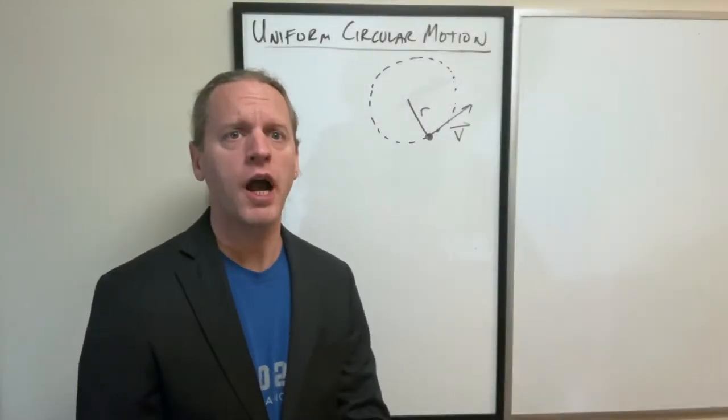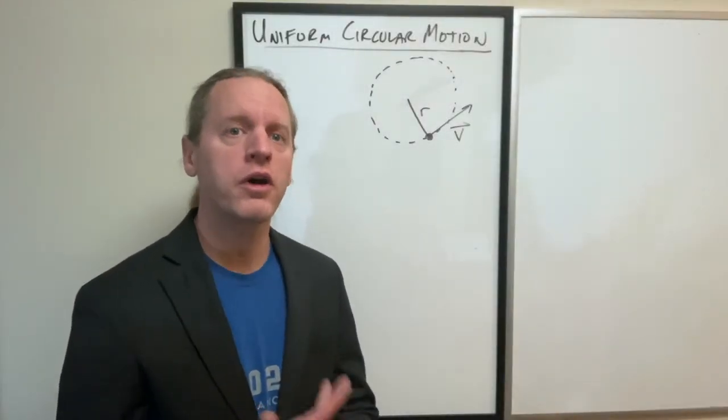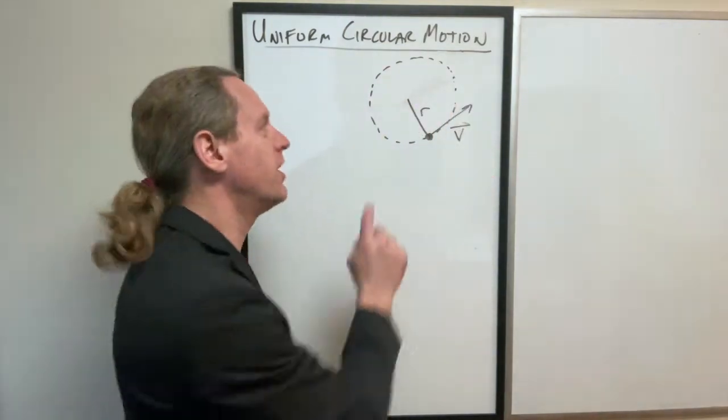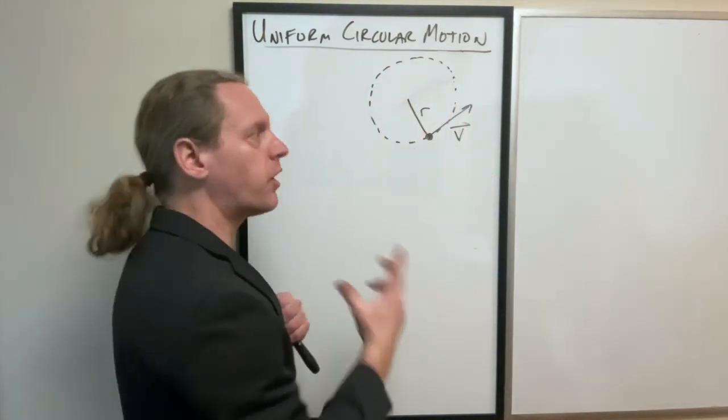Okay, so just to be clear, when we talk about uniform circular motion, what we're referring to here is motion in a circle. In other words, by definition, a constant radius with also a constant speed.